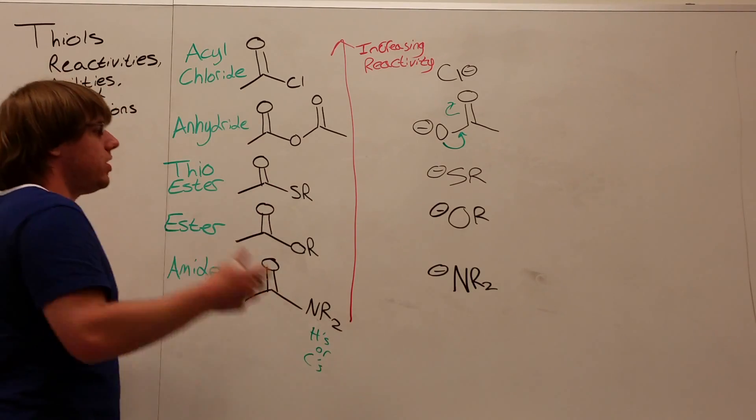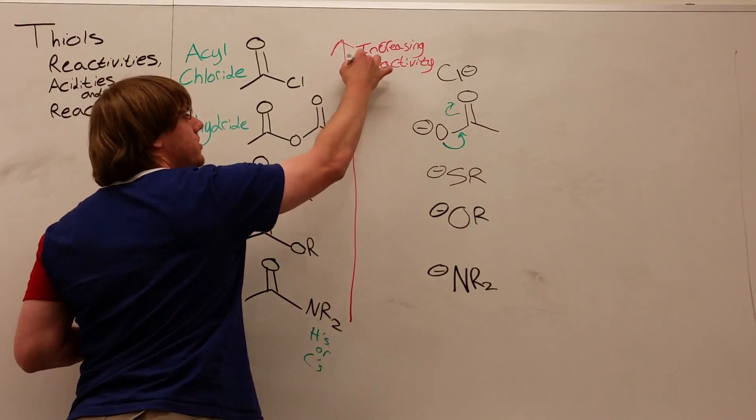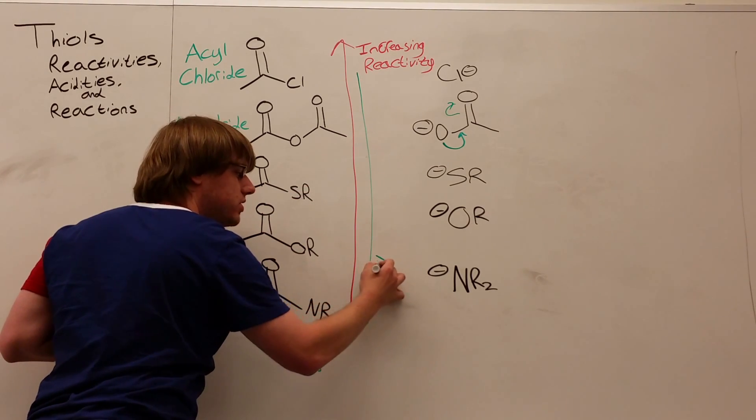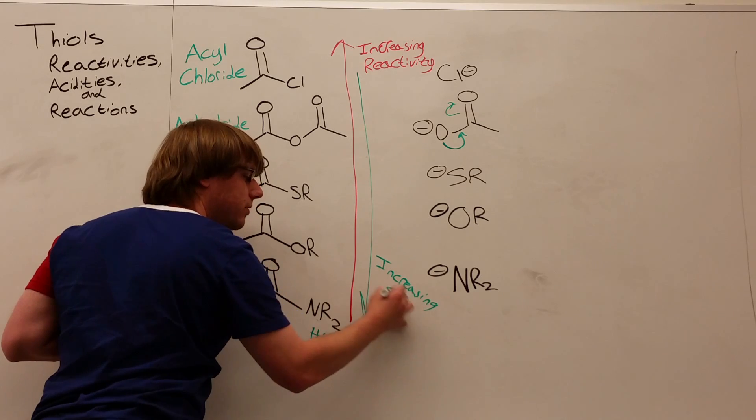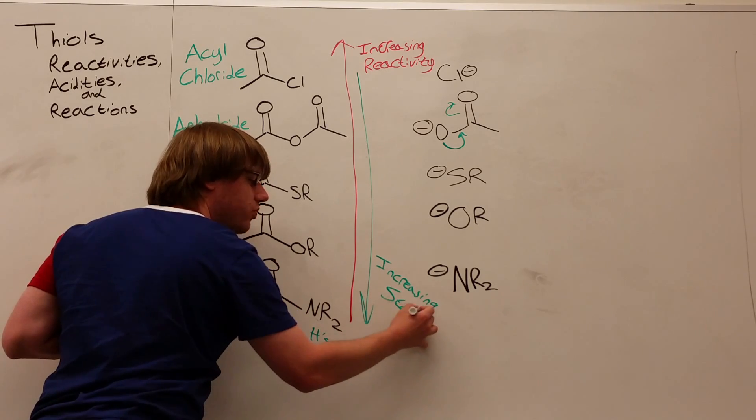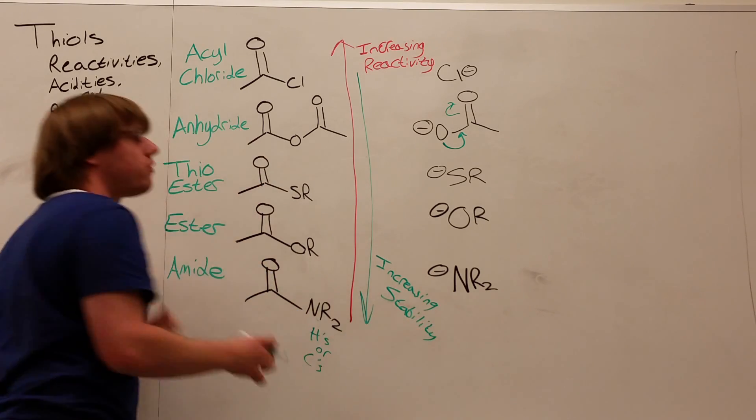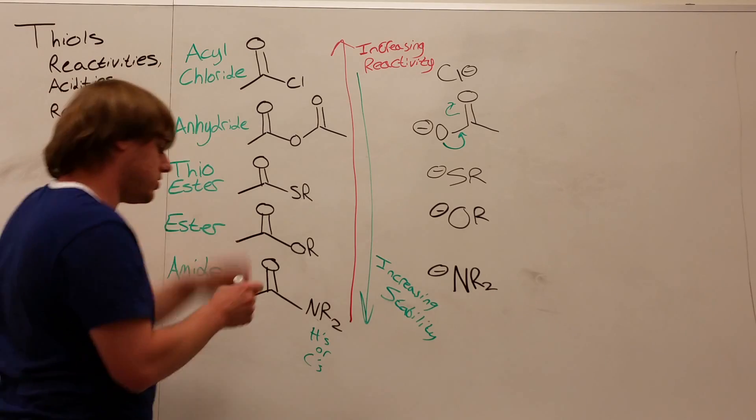So basically, we could also say that, inversely proportional to this, going down, increasing stability. Now, these two arrows are referring to the carboxylic acid derivatives.